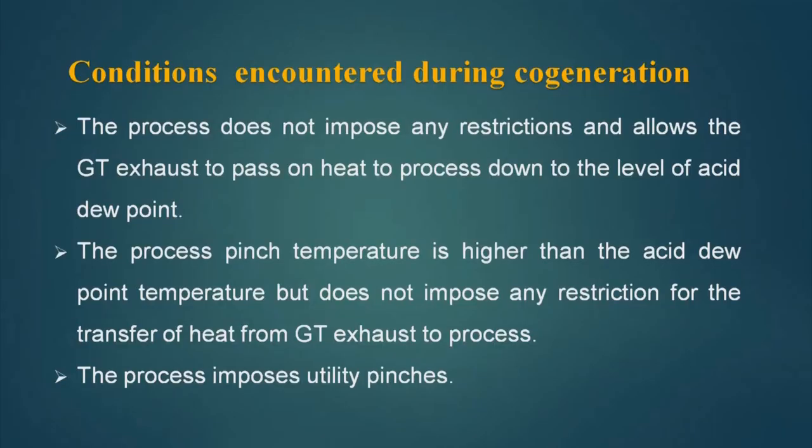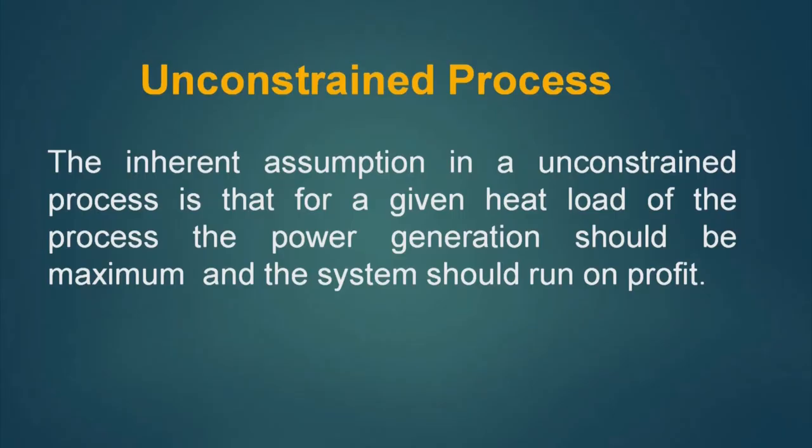The third is that the process imposes utility pinches. If utility pinches are there, then reaching to the acid dew point becomes difficult, the design becomes complicated, and there is a large loss from the system. Now, the first one is called an unconstrained process. The inherent assumption in an unconstrained process is that for a given heat load of the process, the power generation should be maximum and the system should run on profit.